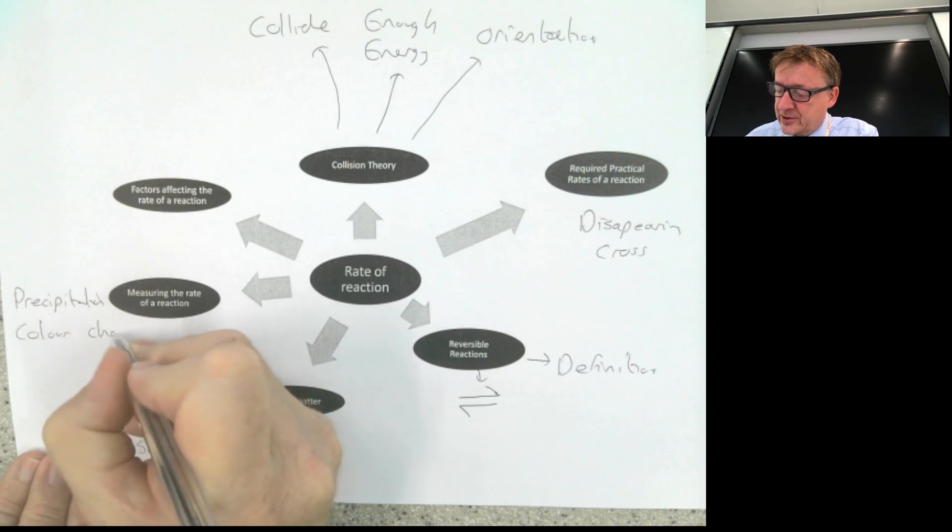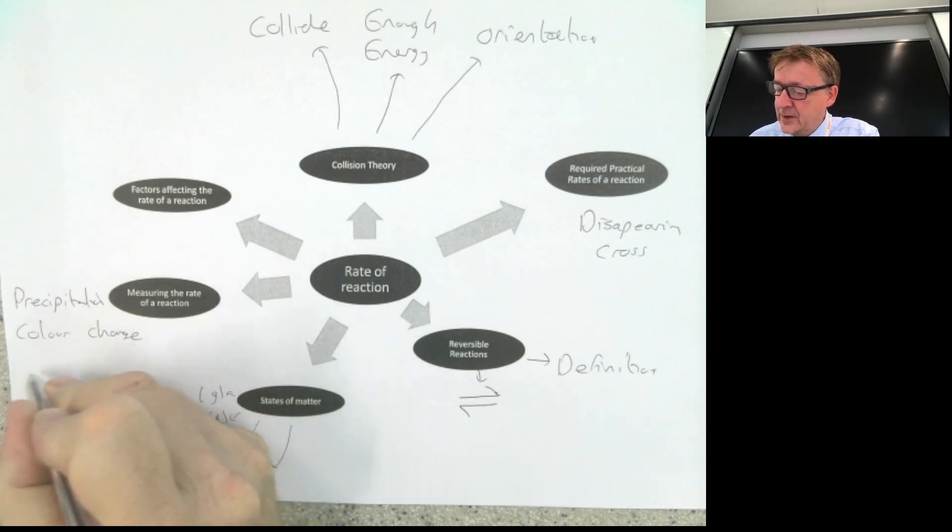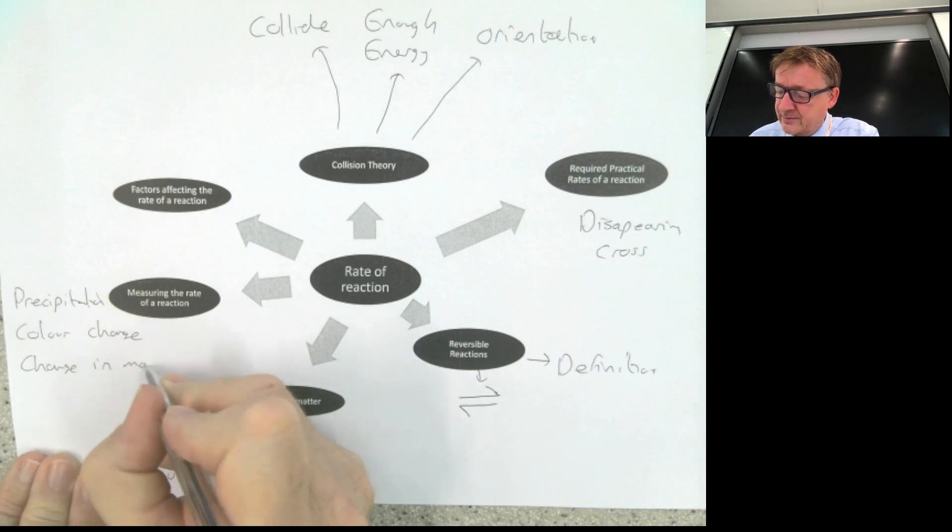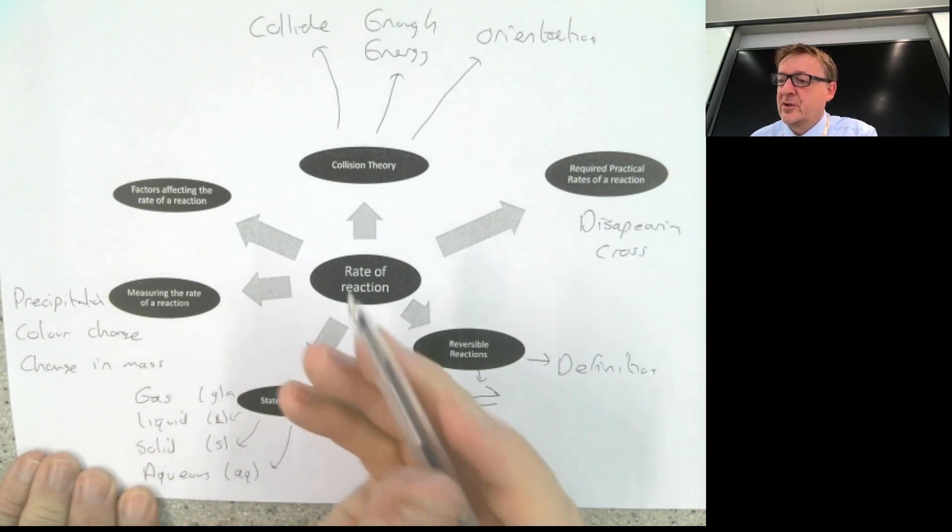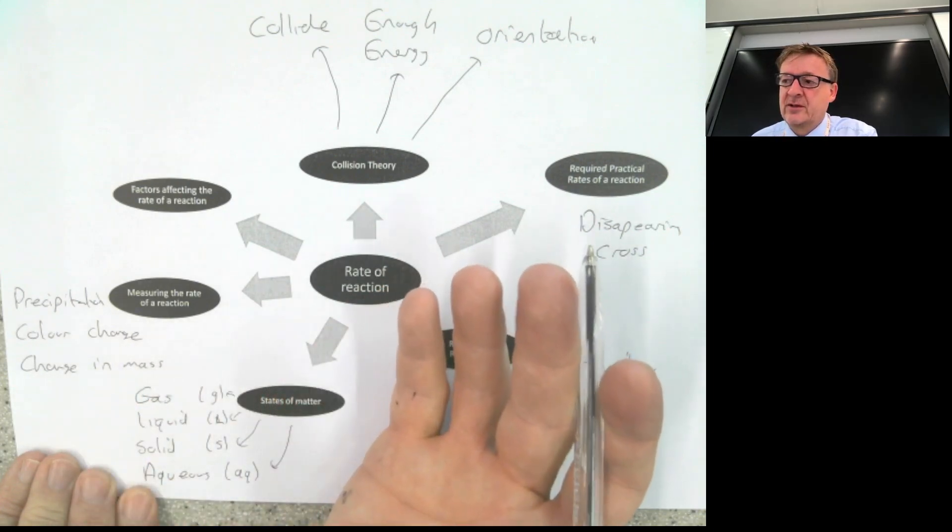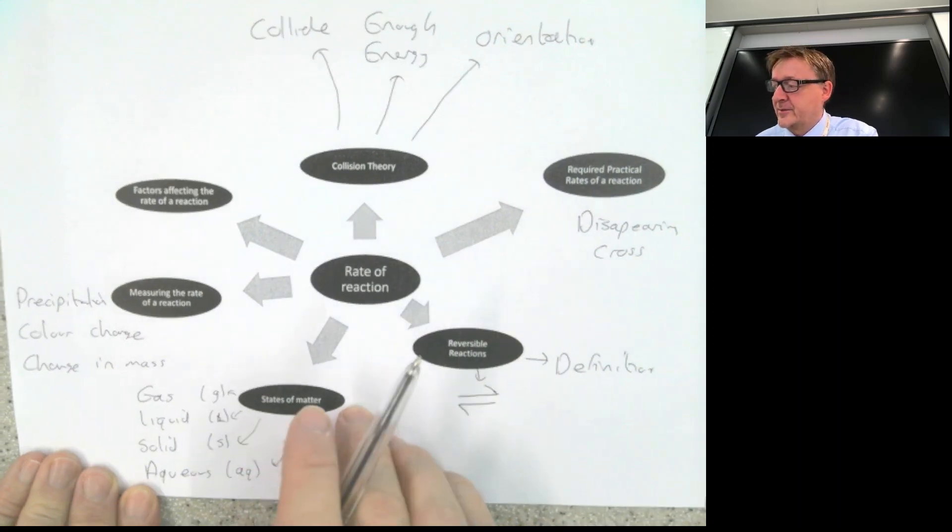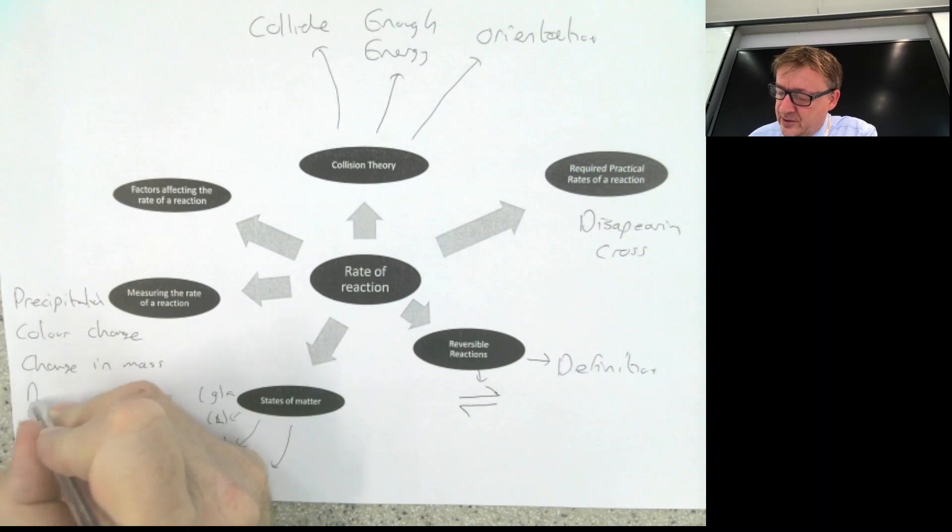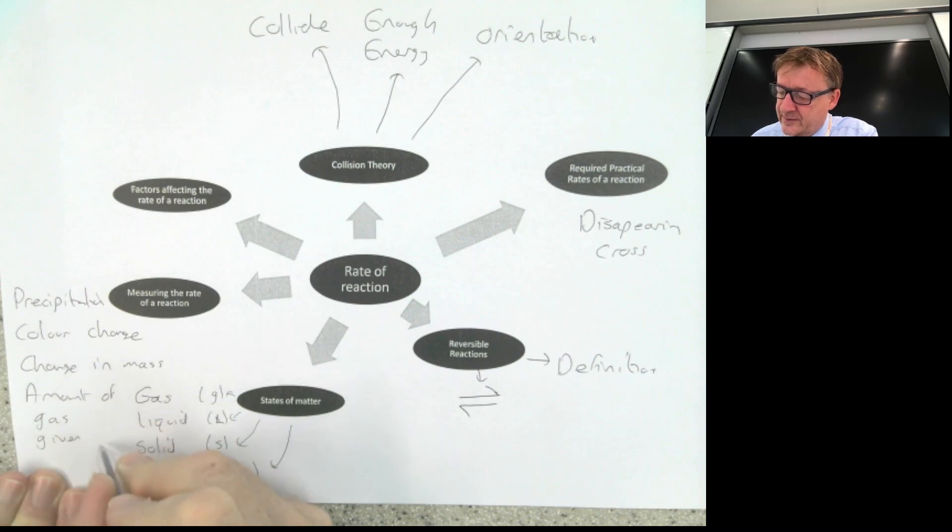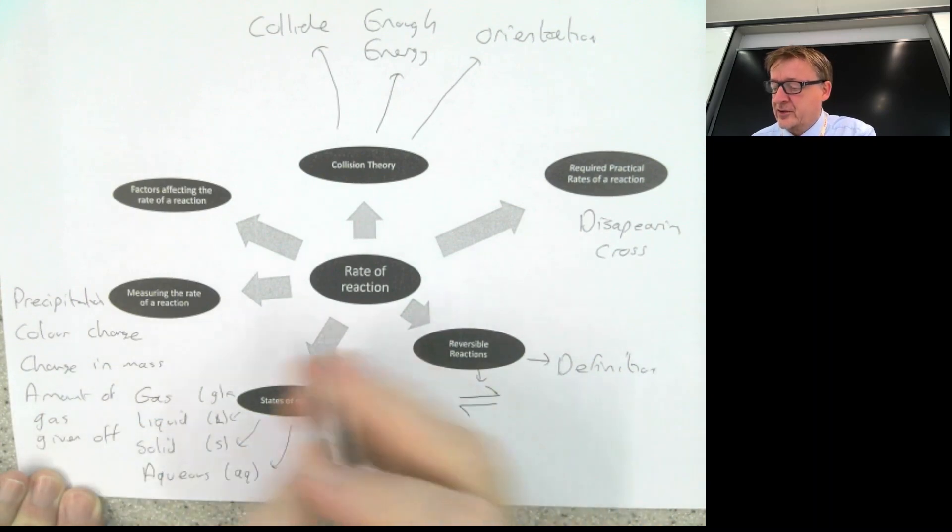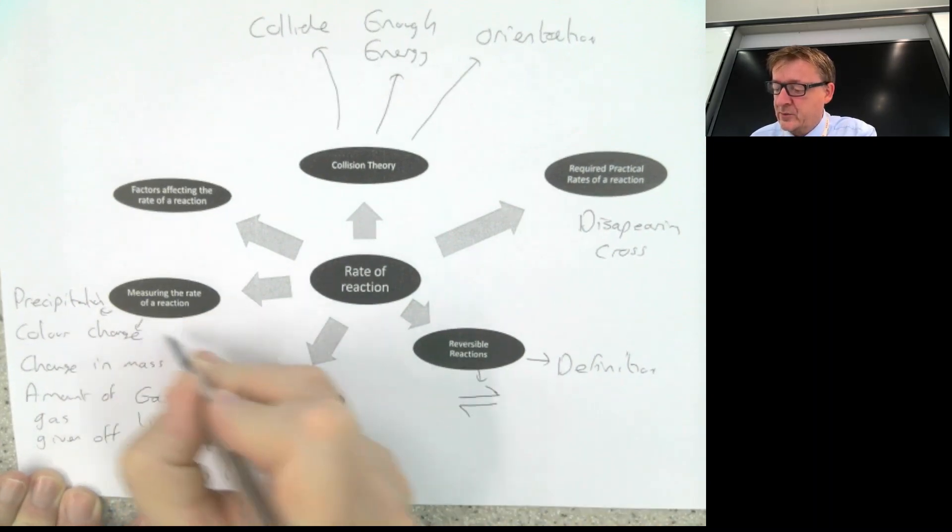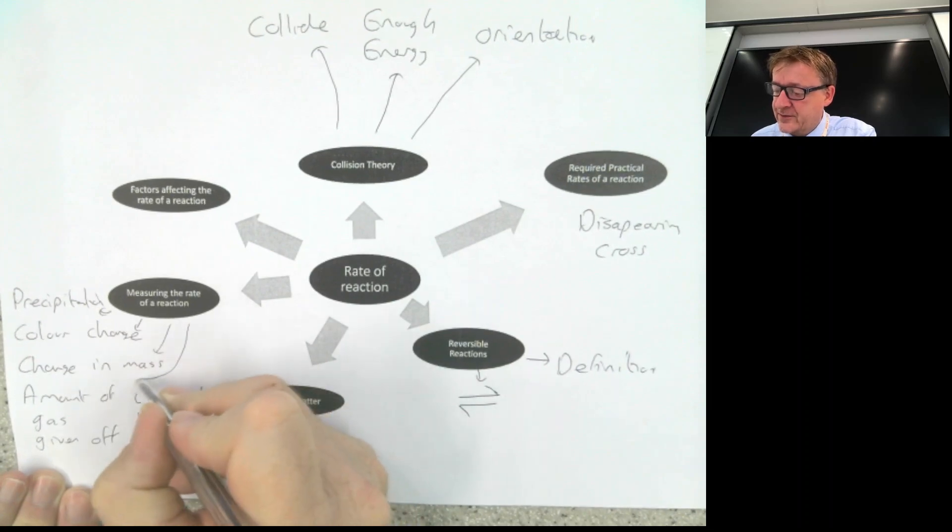You could get a colour change. You could get a change in mass. So that one there is where you've got a conical flask with a reaction going on, and it's sat on a mass balance and the mass goes down. That means a gas is coming off. And you could also have the amount of gas given off. So that could be where you're collecting the gas in a gas syringe.